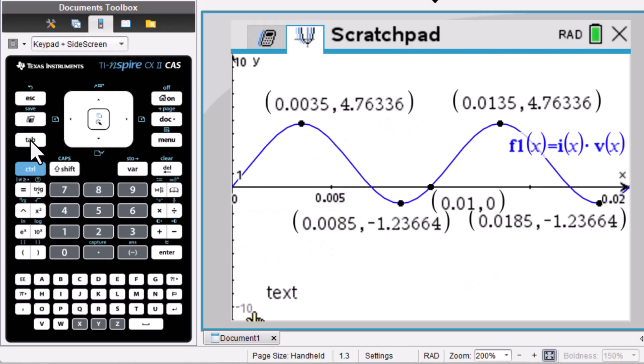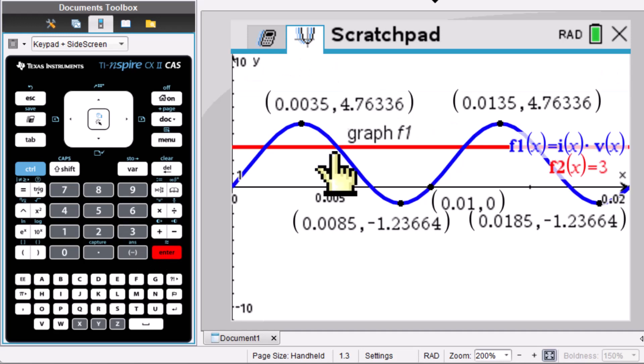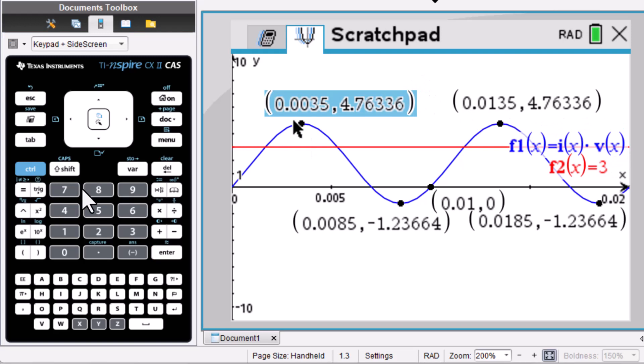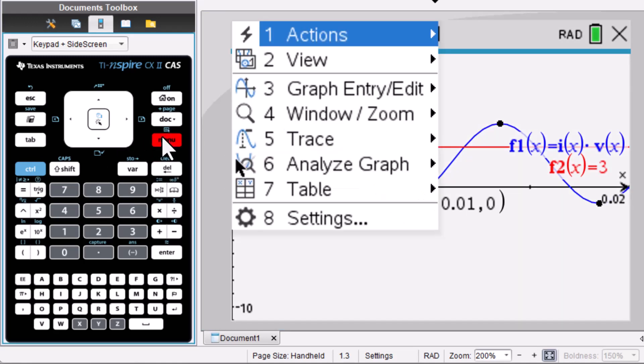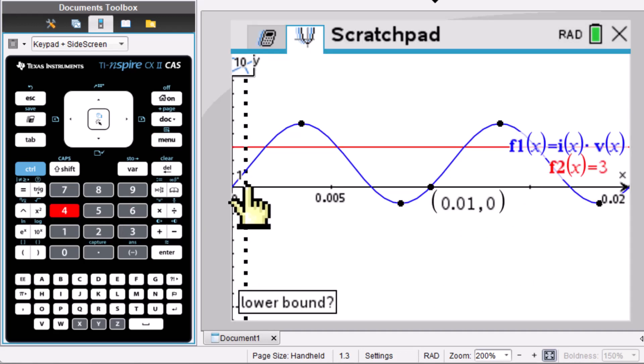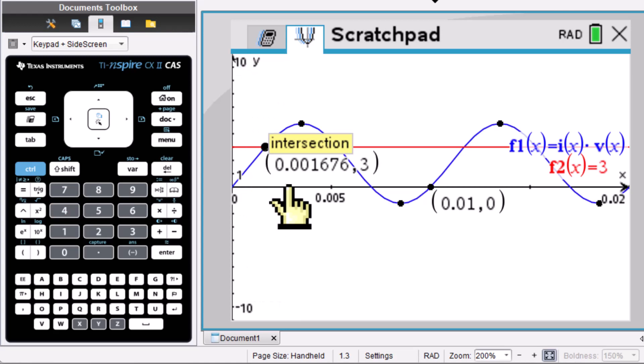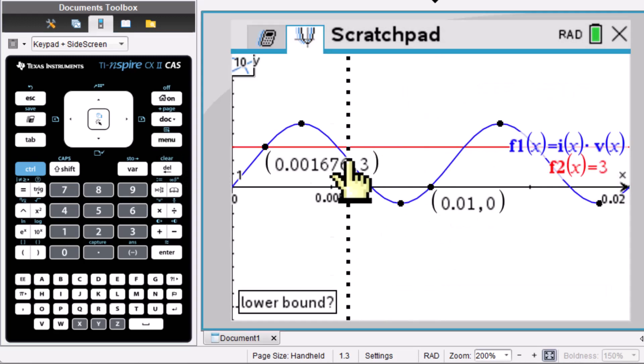Press tab, f1(x) = 3, enter. We need to get intersection. Delete all this maximum and minimum. We need an intersection here. Menu 6, analyze graph, intersection 4. Lower bound, upper bound. Control menu 7, recent.